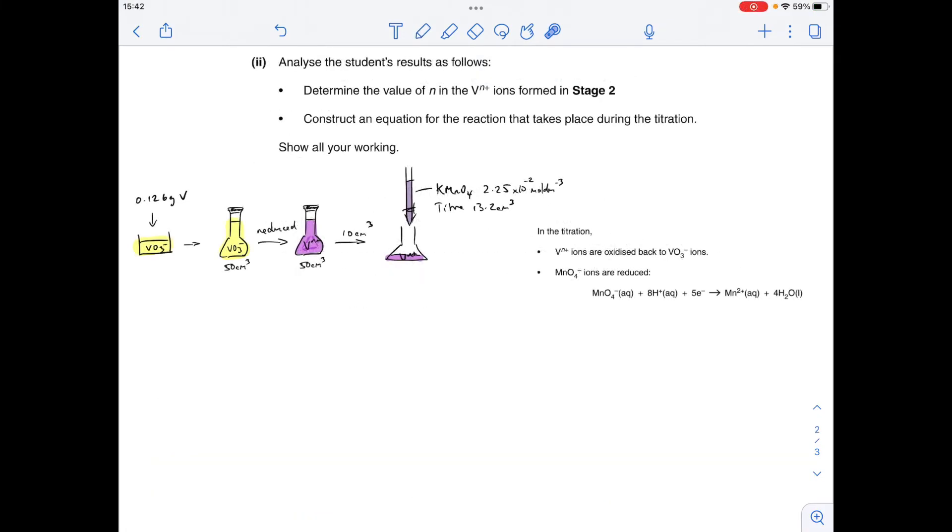So moving on to the calculation now, first thing I'm going to do is work out the moles of the MnO₄⁻ ions used in the titration from this information here. So the end point or the titre, 13.2cm³, concentration of KMnO₄, 2.25 times 10 to the minus 2. So the moles of MnO₄⁻ will be concentration times volume. Remember that needs to be in decimetres cubed. OK, so that's that there, 2.97 times 10 to the minus 4.